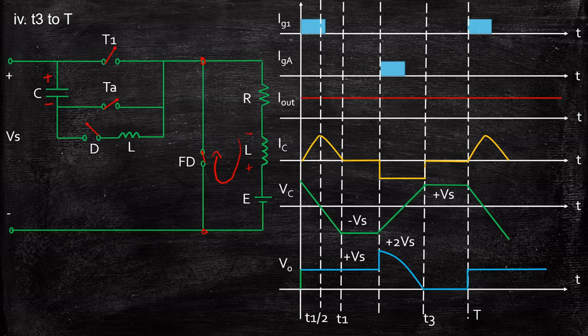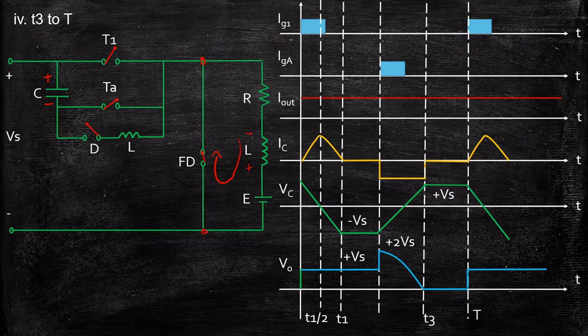Our objective of turning off thyristor T1 through the capacitor has been achieved, and that is the reason why these circuits are required. Although this analysis looks complicated, if you break the circuit into small pieces it becomes easy to correlate and understand the complete operation. I hope this video gave you a clear understanding of voltage commutated chopper. If you have any questions, feel free to type them in the comment section below. If you like this video, please like it and give your valuable feedback.